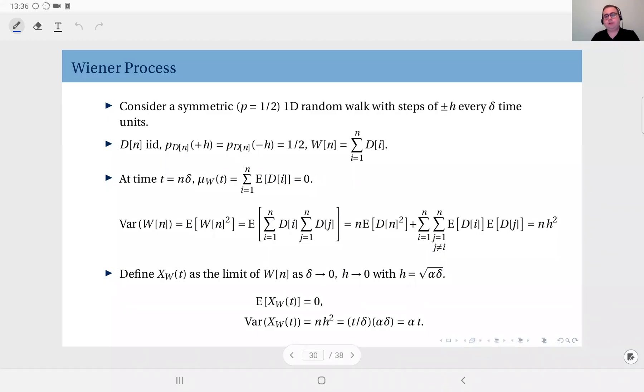Now using this one-dimensional random walk process, we will take its limit to obtain what we call the Wiener process. Let's consider the symmetric one-dimensional random walk. Symmetric means p equals one-half. P equals one-half means I take a step in the positive direction with probability one-half and a step in the negative direction with the same probability.